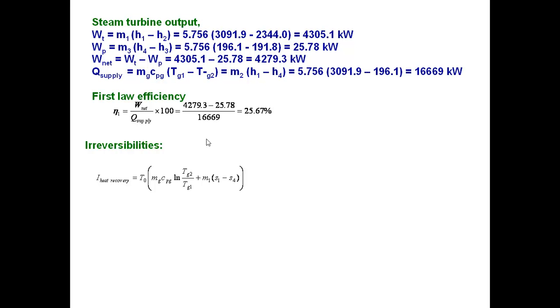The final entropy minus initial entropy we have to take for both hot fluid as well as the cold fluid. After substituting these values, that is temperatures and entropies in the formula, 1722 that is approximately 1.7 megawatts of exergy is destroyed in the heat recovery steam generator.